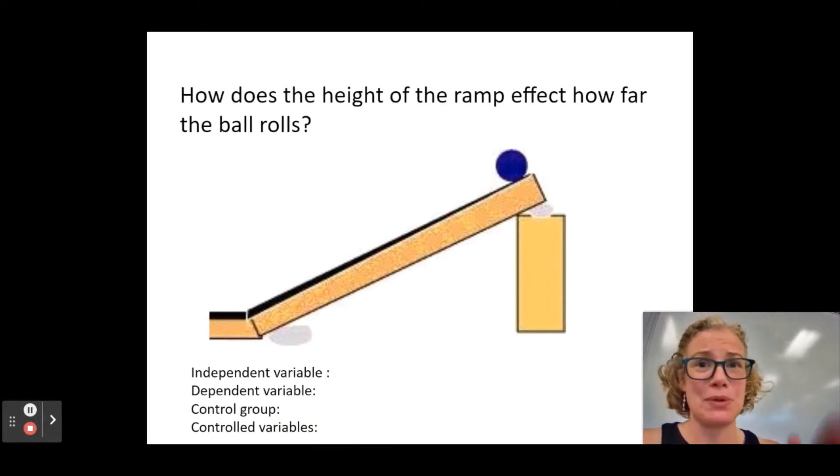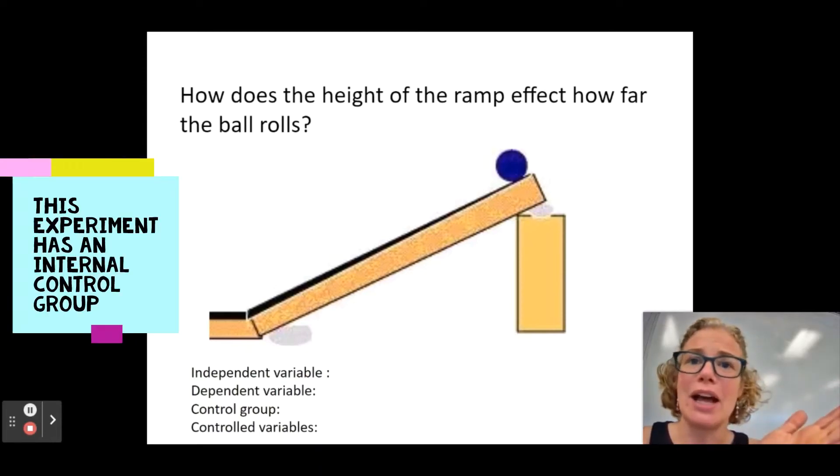Or I suppose you could do, like, completely vertical, maybe, as a comparison, but then it's going to bounce. So probably what we would do in this case is an internal control, which just means we're going to compare, like, you know, a height of three centimeters to five centimeters to seven centimeters and use that as our comparison groups.